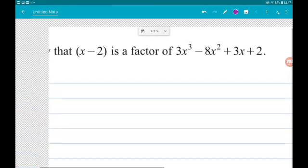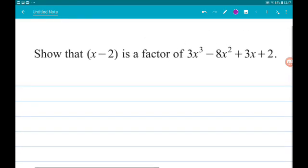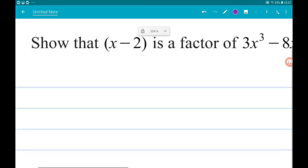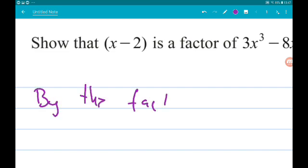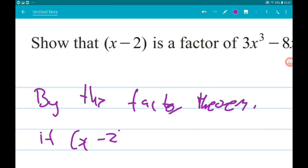Okay, so this is factor theorem stuff. So we should start by saying by the factor theorem if x minus two is a factor, then f of two will equal zero.